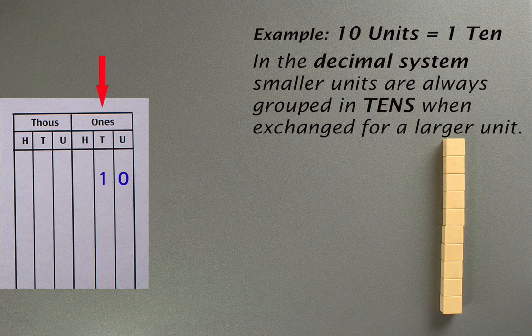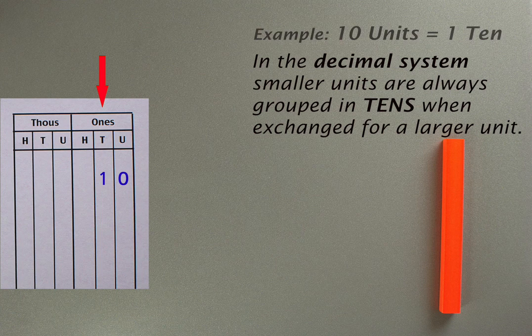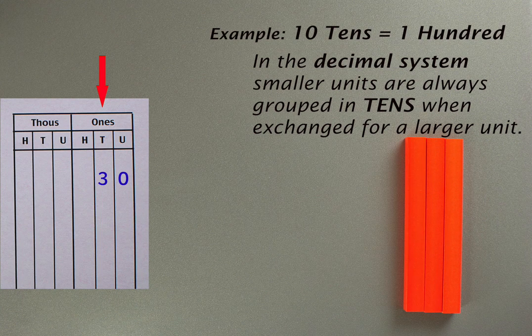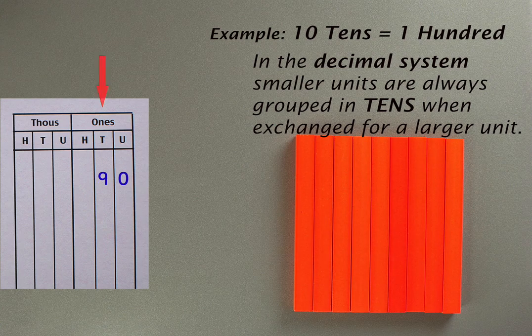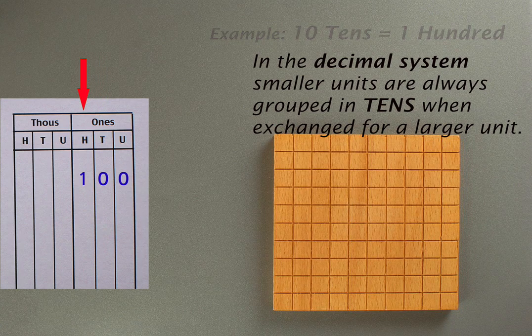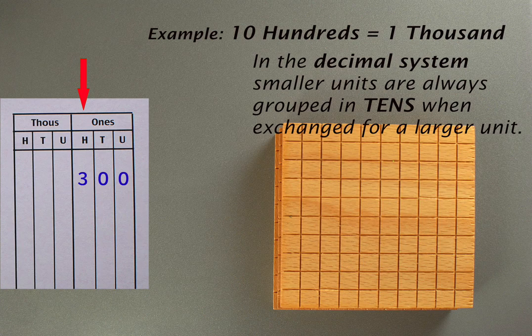Here we can see ten ones being exchanged for one ten, and ten tens being exchanged for one hundred, and ten hundreds being exchanged for one thousand.